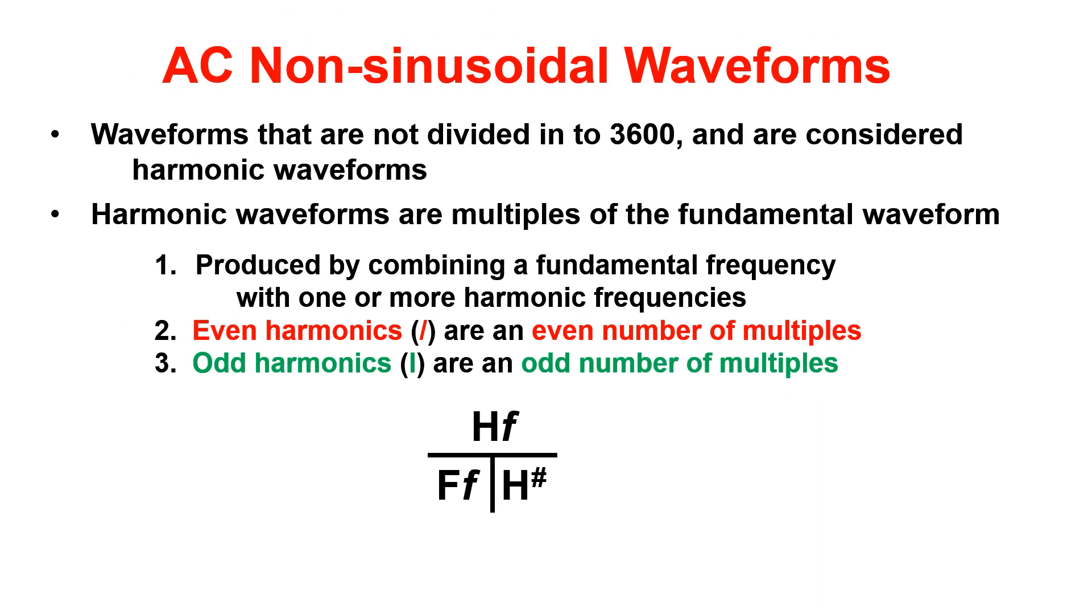Since we can measure our waveforms amplitude, let's move on to non-sinusoidal waveforms. Harmonic waveforms are multiples of the fundamental waveform and are utilized in shaping how the wave looks. They are produced by combining a fundamental frequency with one or more harmonics. Evens are an even number of multiples, whereas odds have an odd number of multiples. Utilize the t-chart below to calculate. Insert the values given and solve for the missing variable.